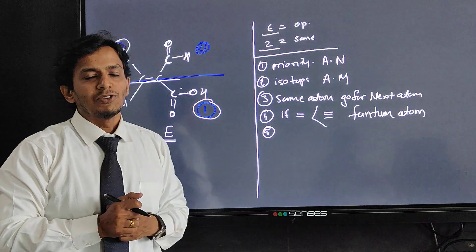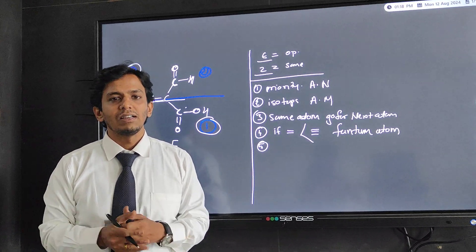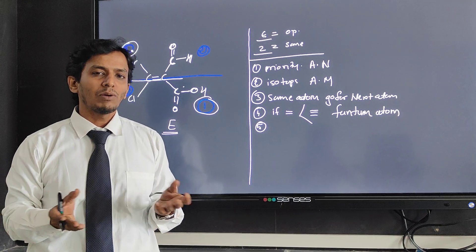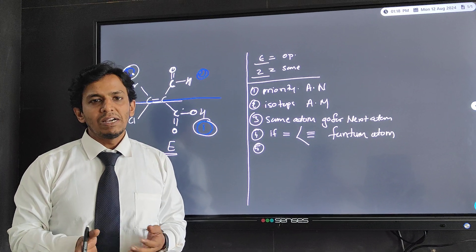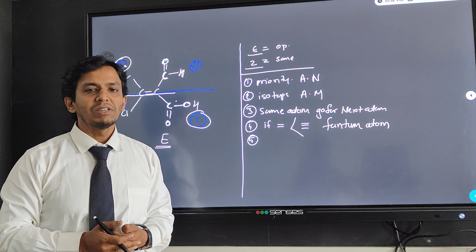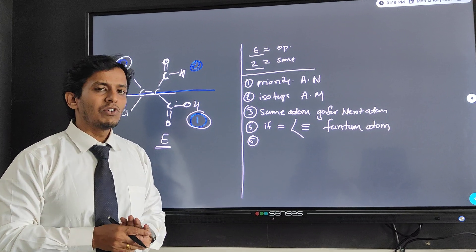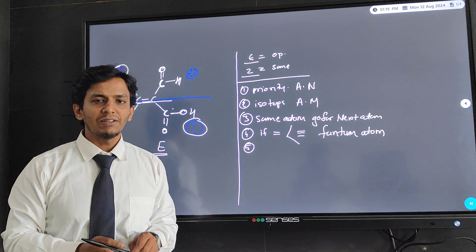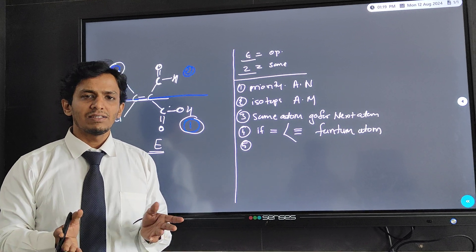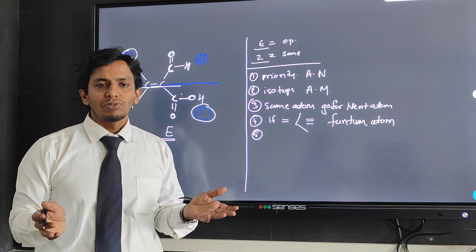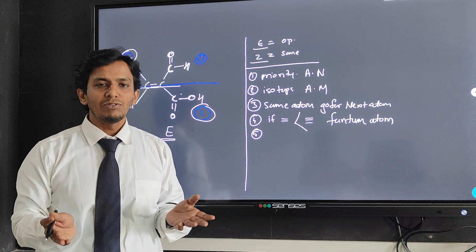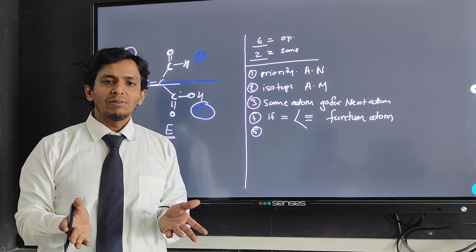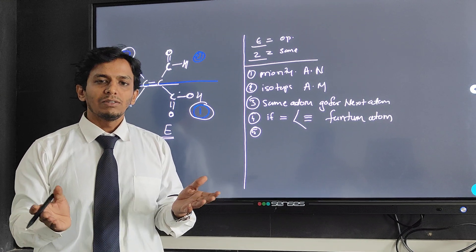Likewise, there are many more examples you will find in books. In Morrison and Boyd it is mentioned as an exercise — you can solve it. If you have a problem, drop a message in the comment box or WhatsApp me. In the next lecture, we will go for optical isomers. This E and Z will be asked in examinations as well as in competitive examinations. I hope students you enjoyed this video. Thank you very much.